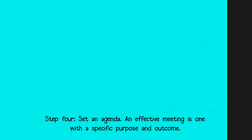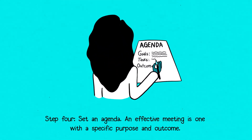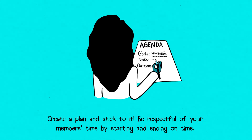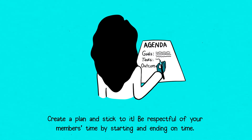Step 4: Set an agenda. An effective meeting is one with a specific purpose and outcome. Create a plan and stick to it. Be respectful of your members' time by starting and ending on time.